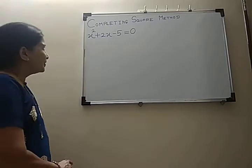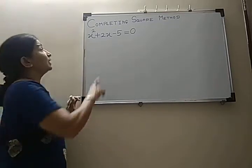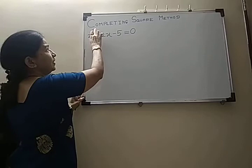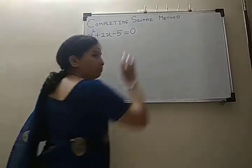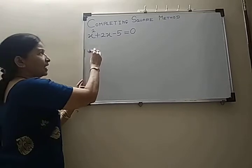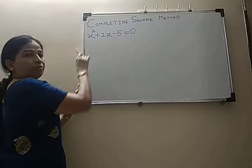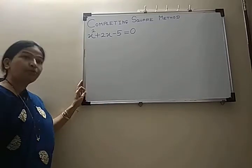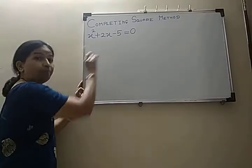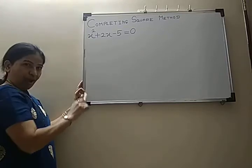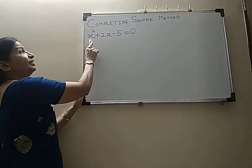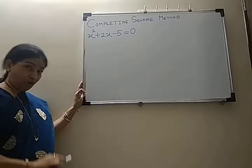Good morning. To solve the quadratic equation, the next method after factorization method is completing square method. For this completing square method, the example is x squared plus 2x minus 5 is equal to 0. First, compare it with the standard form ax squared plus bx plus c is equal to 0. Check whether it is in that form or not.